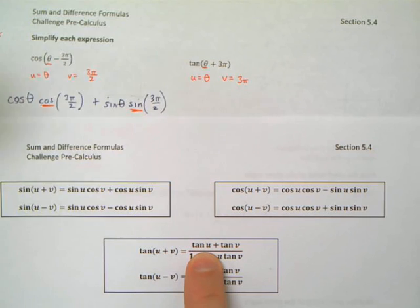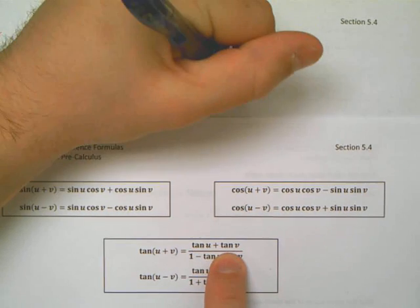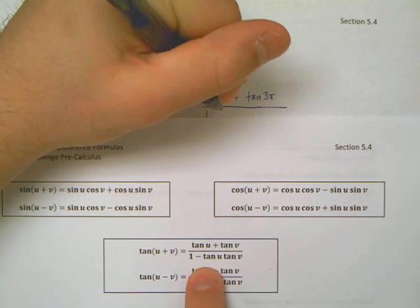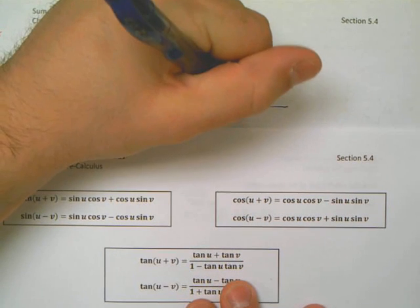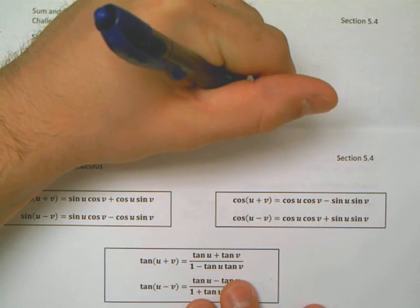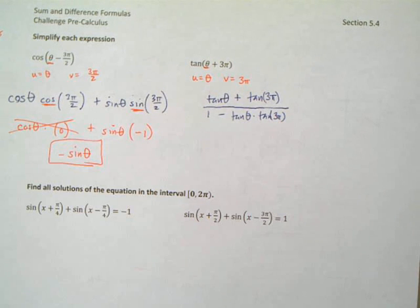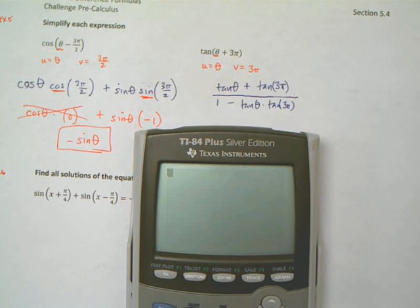plus the tangent of v, which is the tangent of 3π. That's all over 1 minus the tangent of u times the tangent of v, which is tangent θ times tangent 3π. So, I need to now evaluate this, and maybe it helps. You know, if all else fails, I go and I make sure my calculator is in radians mode, and I say tangent of 3π. I find out that that's 0.